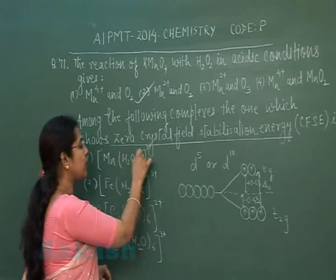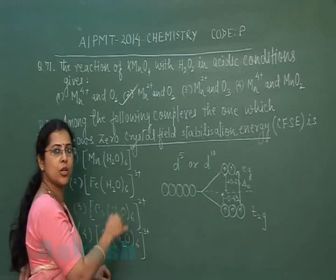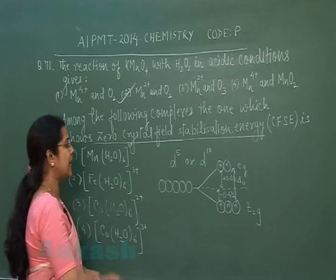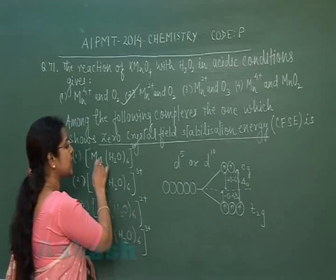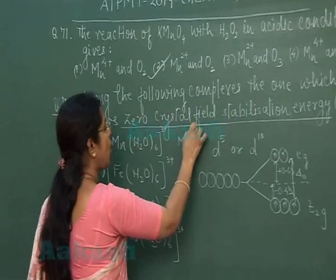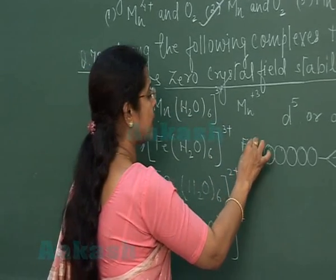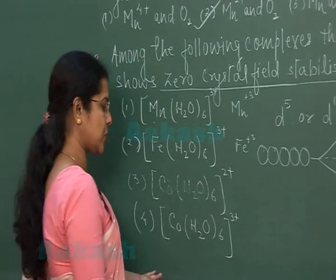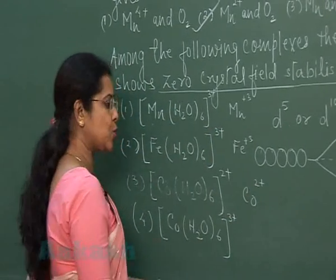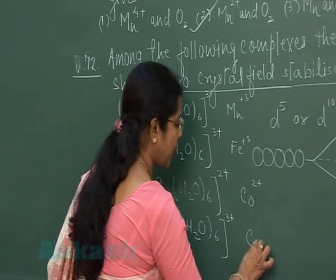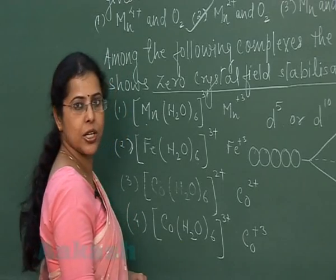Now the first complex is given [Mn(H2O)6]3+. You can see in all four options the ligand is H2O, which is a neutral ligand. So in this complex, metal is present in +3 oxidation state. In the second complex, iron is present in +3 oxidation state. In third option, cobalt is present in +2 oxidation state, and in fourth option, cobalt is present in +3 oxidation state.